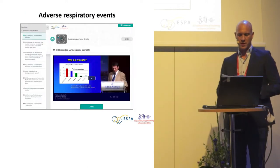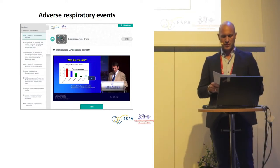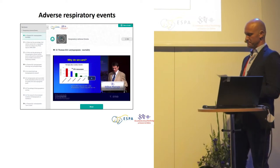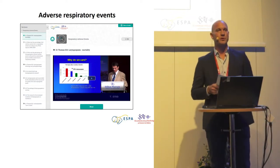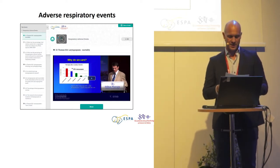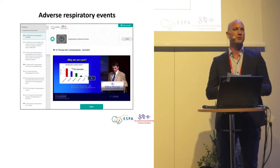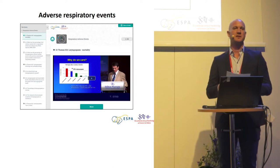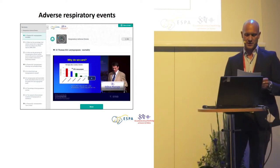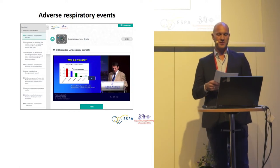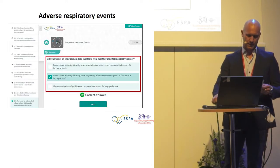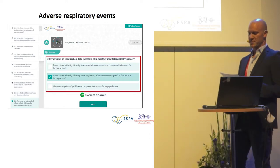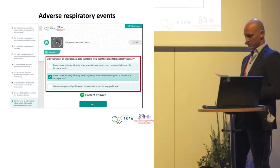Our second e-learning module, Adverse Respiratory Events, concerns one of the major events that causes morbidity and mortality in pediatric anesthesia. The objectives of this module are to introduce the course participant to an overall understanding of the clinical and theoretical challenges relating to laryngo- and bronchospasm during anesthesia. The course module consists of an introduction, objectives and learning goals, followed by relevant video sequences, just as previously described for the coagulation and transfusion module. The video sequences are followed by multiple choice questions meant to further enlighten the course participant on relevant issues related to adverse respiratory events.